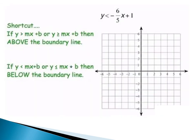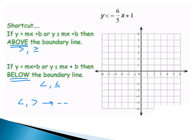You may have noticed a shortcut: when we had less than, we shaded below the line; when we had greater than, we shaded above. So the rule is: if you see greater than or greater than or equal to, shade above the line. If you see less than or less than or equal to, shade below the line. Also: if you see less than or greater than (without equal to), use a dashed line. If you see less than or equal to or greater than or equal to, use a solid line.